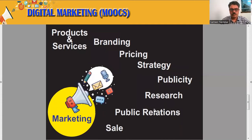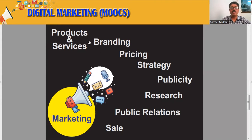Now let us try to understand the different elements of marketing. First, we need some product or service — without a product or service, we cannot do any type of marketing. The first element is the product and services. The second element is branding — we should give an attractive name or title to our product so that people get attracted. We can create an attractive package design, use attractive colors, and create a logo. All those things come under branding. Proper branding of the product or service is essential for marketing.